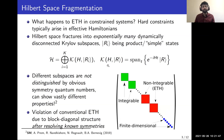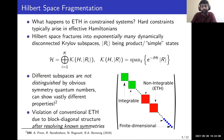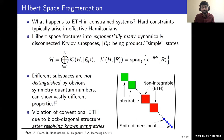I'll be talking about Hilbert space fragmentation. The way you get there is to ask what happens to ETH in constrained systems. Hard constraints typically arise in effective Hamiltonians — for example, when a system is subjected to a very strong electric field, you can write down effective Hamiltonians within equal-energy or resonant subspaces. The phenomenon of Hilbert space fragmentation is the observation that in such systems, the Hilbert space fragments into several dynamically disconnected Krylov subspaces.